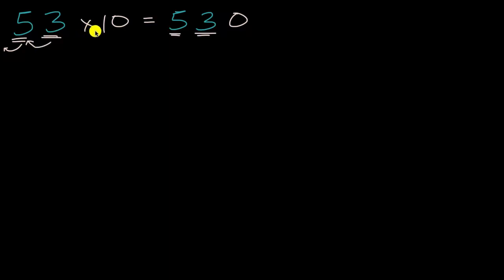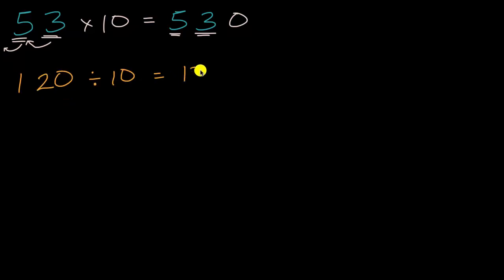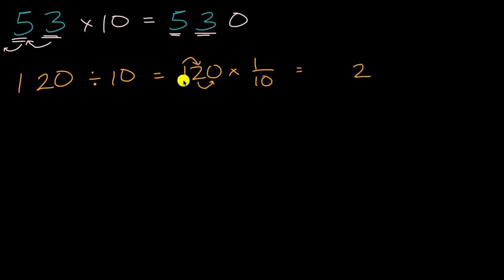And we saw that if we divide by 10, you have the opposite effect. So let's say if I had 120 and I divide by 10 — I could also say this is the same thing as 120 times one tenth — all the digits are going to shift one place to the right. What used to be in the tens place will now be in the ones place, and what used to be in the hundreds place will now be in the tens place. So this is just going to be equal to 12.